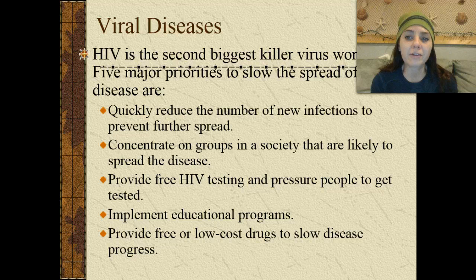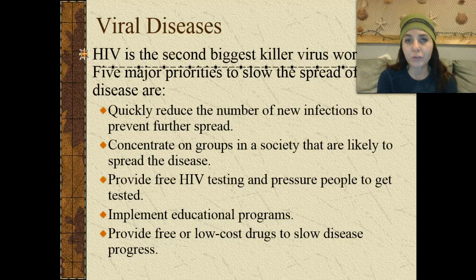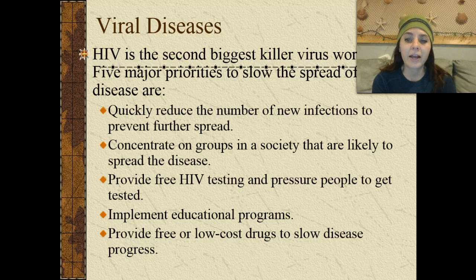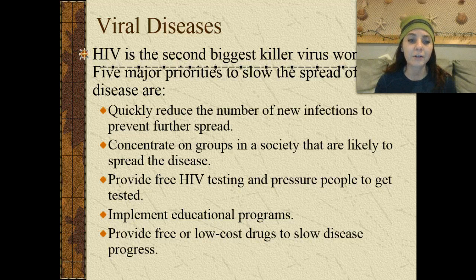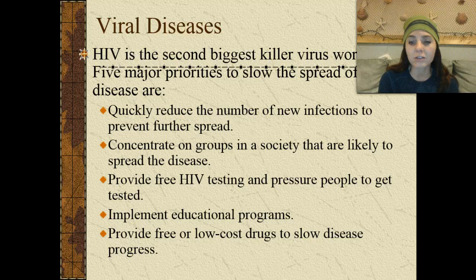HIV is the second biggest killer virus worldwide. There are five major priorities to slow the spread of the disease: quickly reduce the number of new infections; concentrate on groups in society likely to spread the disease; provide free HIV testing and pressure likely-exposed individuals to get tested; implement educational programs; and provide free or very low-cost drugs to slow the progress of the disease.